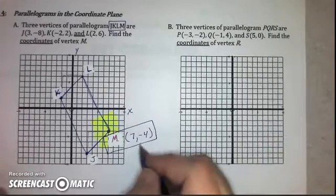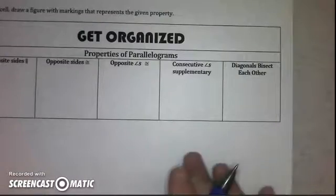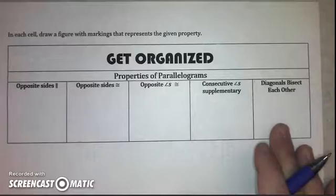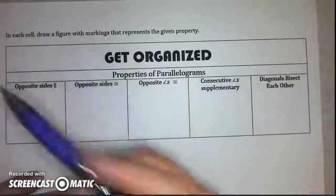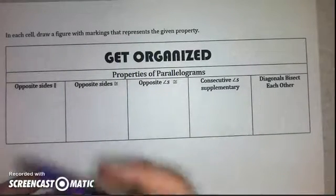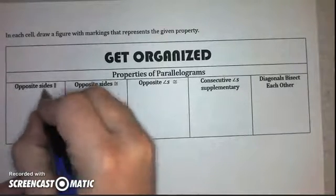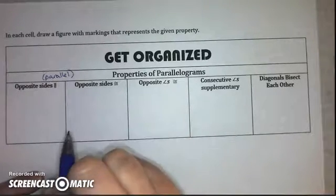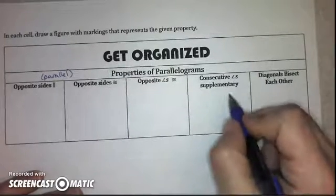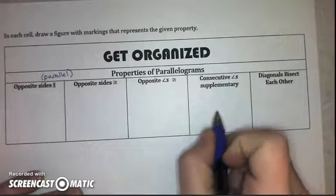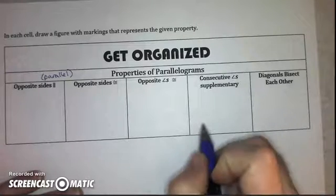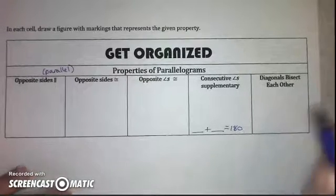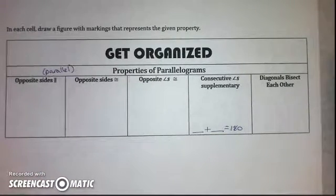We're not going to do part B — we'll come back and show more examples in class if you have questions. To finish out the video: in each cell of your table, draw a parallelogram with the markings representing each given property. Draw one showing opposite sides are parallel, one with opposite sides marked congruent, one with opposite angles marked congruent, one with consecutive angles marked supplementary including an equation, and one showing diagonals bisecting each other. Make sure you have this filled out before you get to class.